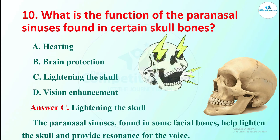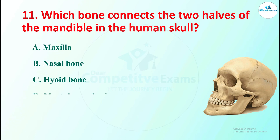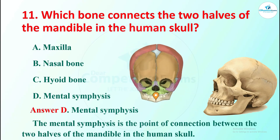Question 11: which bone connects the two halves of the mandible in the human skull? Options are maxilla, nasal bone, hyoid bone, or mental symphysis. The right answer is mental symphysis. The mental symphysis is the point of connection between the two halves of the mandible in the human skull.